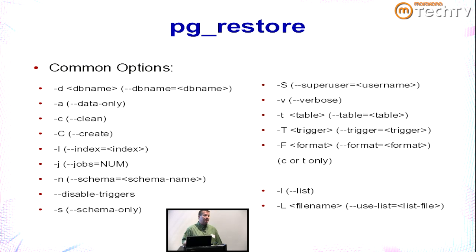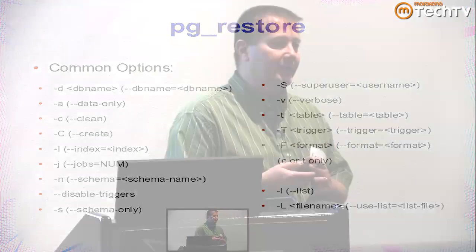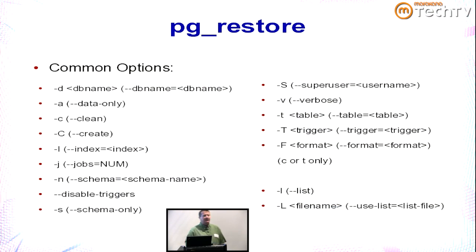You can restore only DDL (--schema-only), restore individual schemas, disable triggers during restore, restore individual tables and triggers. It's not an all-or-nothing thing. You do have to specify -F to tell it whether it's a custom file or a tar-formatted file. There are also -l and -L flags that give a really powerful way to create enormous flexibility in terms of what you want to recover.